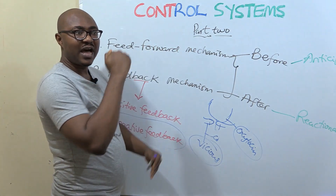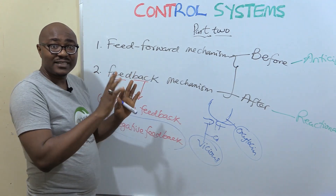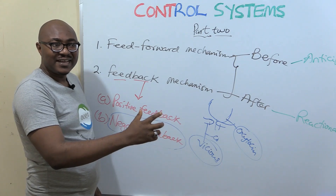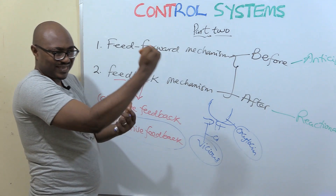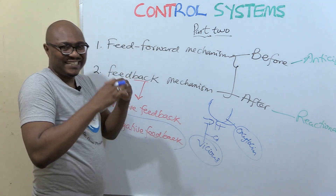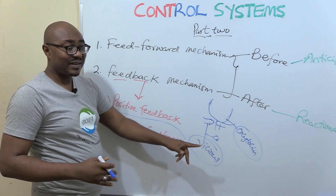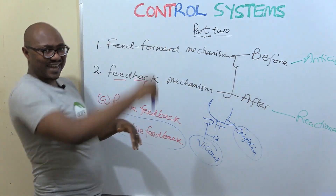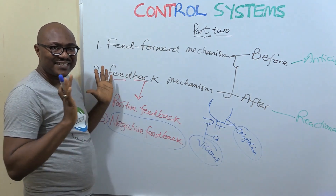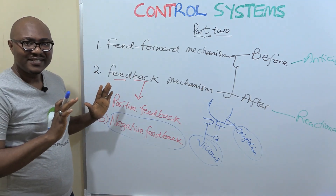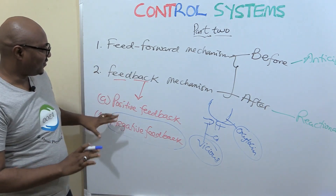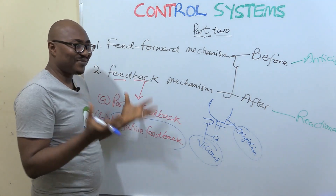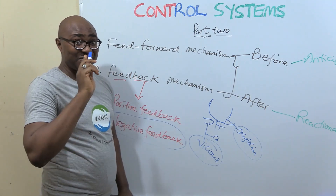For example, if blood pressure rises higher than normal, the control center interprets this and responds through the effector to orchestrate changes that bring the blood pressure back down. The negative feedback resists change, unlike positive feedback which promotes it. These are the two broad sub-mechanisms of feedback, and this is how the body operates to maintain a stable, suitable environment for normal functioning.